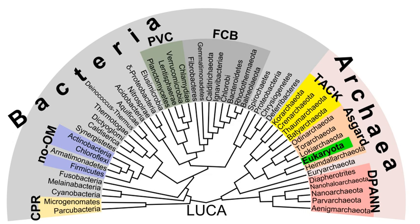Transduction of bacterial genes by bacteriophage appears to reflect an occasional error during intracellular assembly of virus particles, rather than an adaptation of the host bacteria. The transfer of bacterial DNA is under the control of the bacteriophage's genes rather than bacterial genes. Conjugation in the well-studied E. coli system is controlled by plasmid genes and is an adaptation for distributing copies of a plasmid from one bacterial host to another. Infrequently, a plasmid may integrate into the host bacterial chromosome and subsequently transfer part of the host bacterial DNA to another bacterium. Plasmid-mediated transfer of host bacterial DNA also appears to be an accidental process rather than a bacterial adaptation.